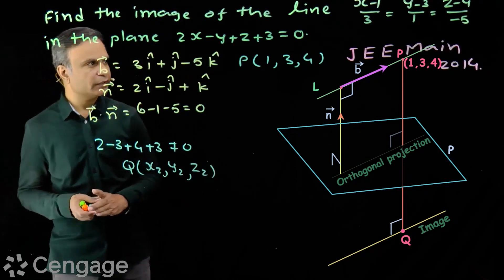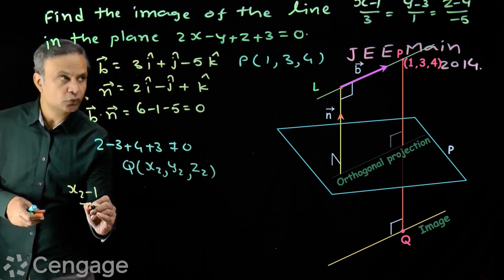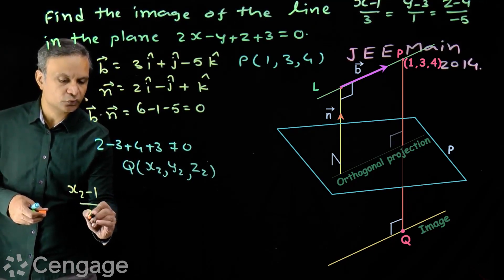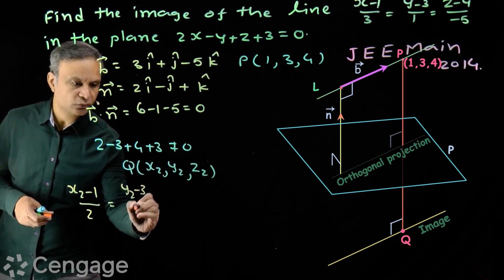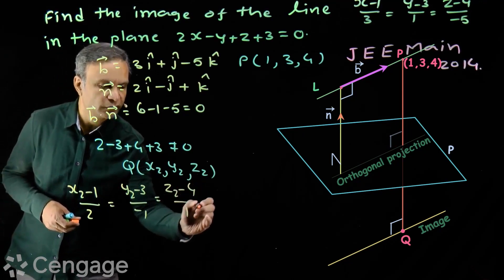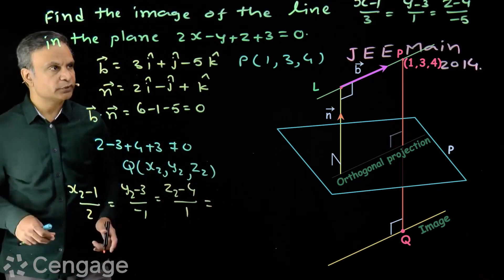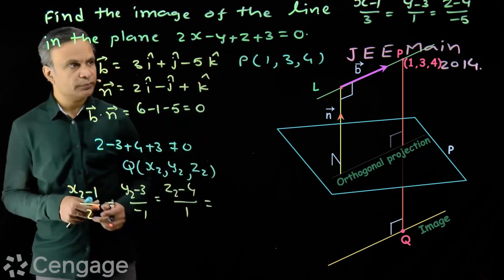We frequently use formula. Using formula, we have x2 minus 1 over 2 equal to y2 minus 3 over minus 1 is equal to z2 minus 4 over 1. Here, 2 minus 1, 1 are direction ratios of vector normal to the plane.